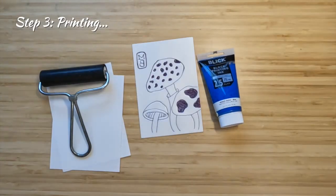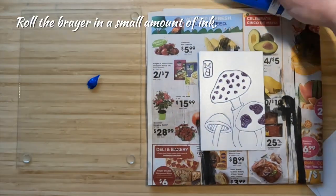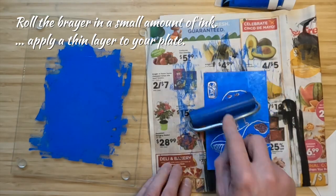For the printing phase, you'll need to go to an inking station. Here you'll roll a very thin amount of ink on the brayer and transfer it to your foam plate.